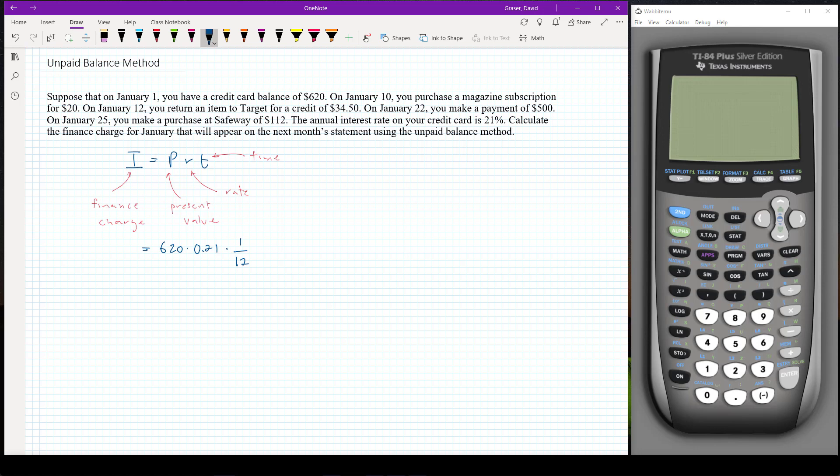So now let me turn on my calculator and put that on. So we're going to say six hundred and twenty times point two one times one divided by twelve. So we get ten dollars and eighty five cents for the finance charge that's going to be on the January bill.